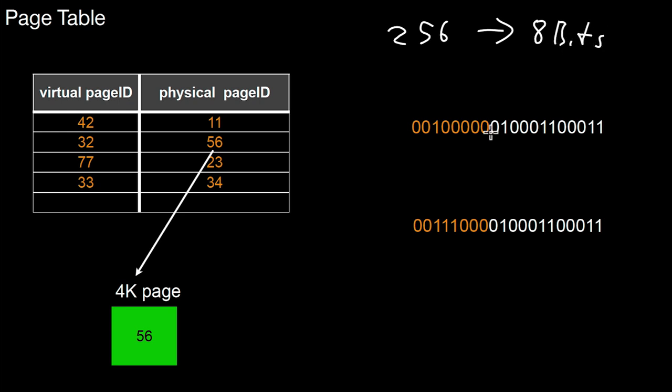So a memory address has as its first 8 bits the page number. And then following are 12 bits. Why 12 bits? Because I assume 4 kilobyte pages. 4 kilobytes can be addressed with 12 bits as 2 to the power of 12 equals 4k.